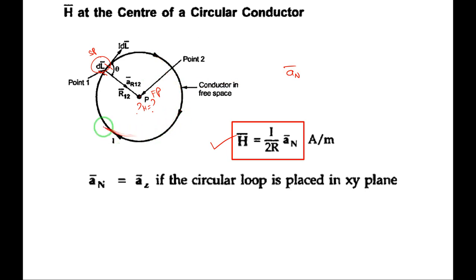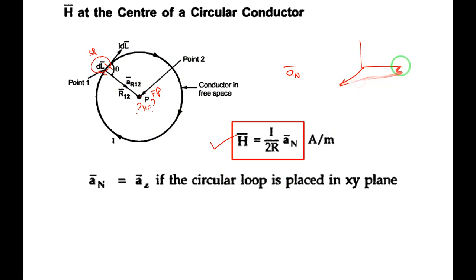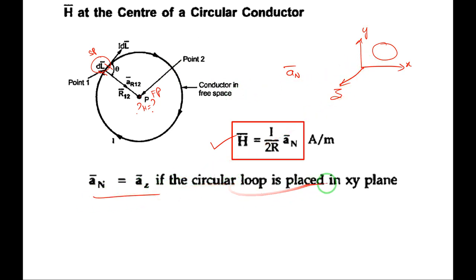Using the right-hand screw rule: the advancement of the screw indicates the direction of current and the rotation of the head indicates the direction of flux lines. If the circular conductor is located in the XY plane, the direction of flux is along Z, so an = az. The an vector will be perpendicular to the plane containing the circular conductor.